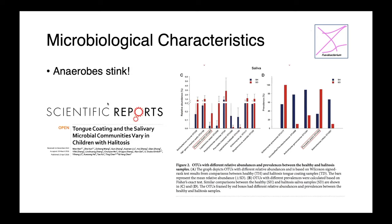Another feature of anaerobes is that they stink — they smell really terrible. A paper from Scientific Reports nicely summarized this: they looked at children with halitosis and compared the microbial communities of their mouths. Those kids who had the worst breath had a number of anaerobes, including Prevotella species. The red bars on the histogram indicate children who had halitosis, and the blue bars indicate those who didn't, showing that kids with bad breath had more Prevotella than those without.